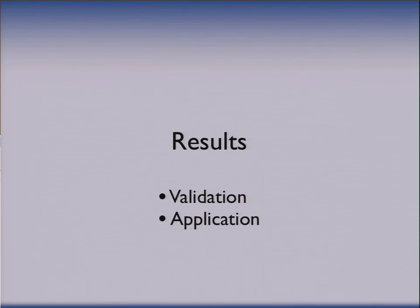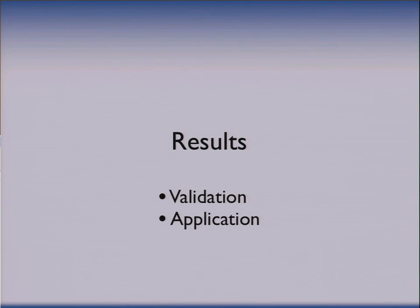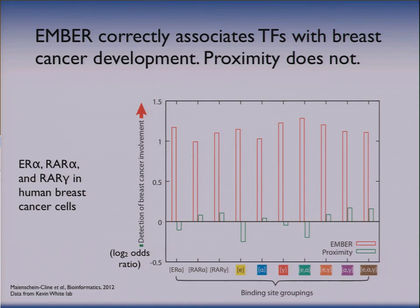Some of the first interesting results are actually validating the method. This is a new computational method — it gives me an answer, but how do I know that the answer is any good? In that context, I want to validate that the target genes I get are good in some way, and I want to validate that the expression pattern, the behavior that I'm inferring for the transcription factor, is also correct. And then, hopefully not too rushed, I want to tell you about an application where we've used the method for discovering new biology.